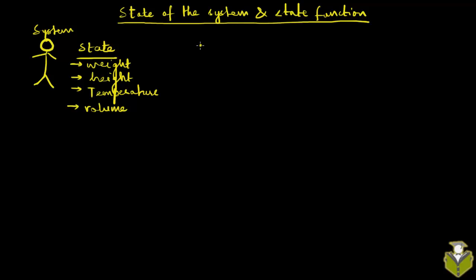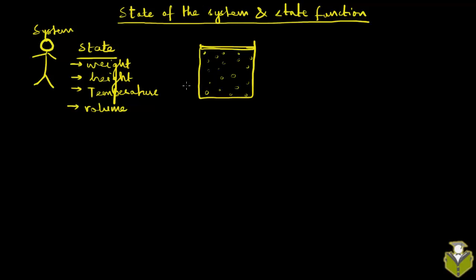Now let's say you have a container filled with gas — you are going to come across this example again and again in thermodynamics. Let's say this is an enclosed container with a gas. To describe the state of the system here — everything else around this is surroundings — the state can be described by measuring the pressure of the gas, the volume of the gas, and the temperature of the gas. These are the macroscopic or bulk properties of this system that describe the state of the system.